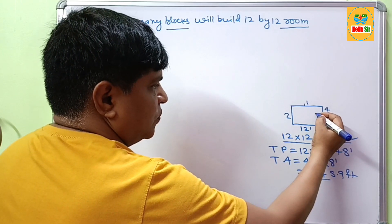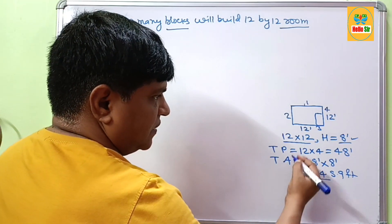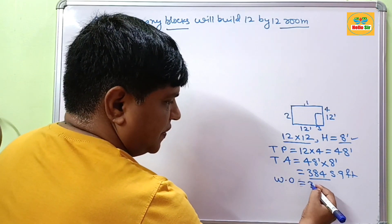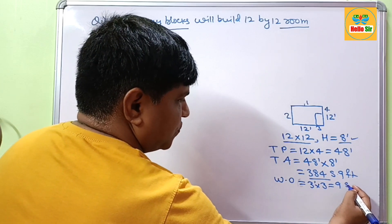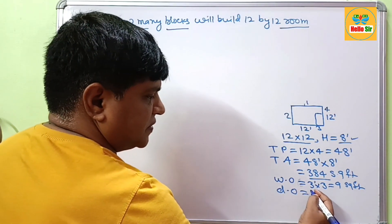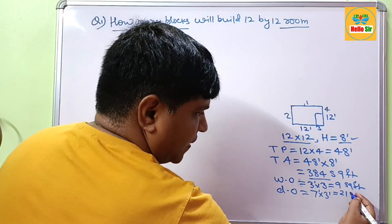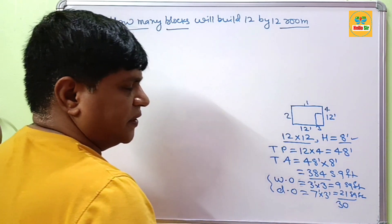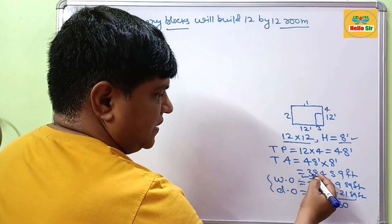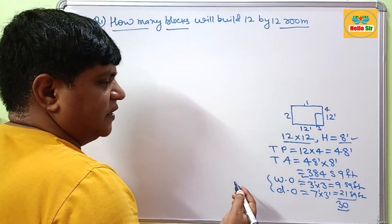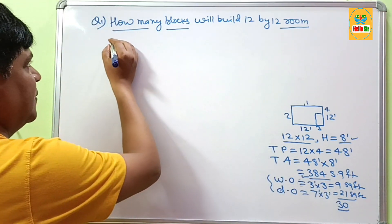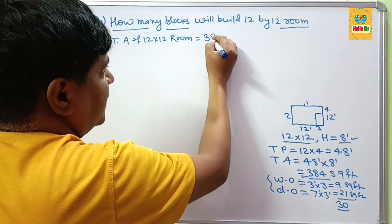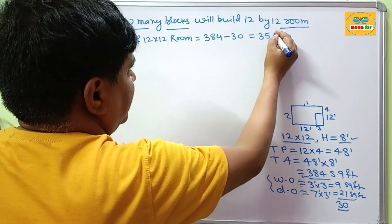The room has door and window openings, so you must deduct those areas. The window opening has dimensions 3 feet x 3 feet, which equals 9 square feet. The door opening is 7 feet x 3 feet, which equals 21 square feet. Adding both openings: 9 plus 21 equals 30 square feet. So the net wall area is 384 minus 30, which equals 354 square feet.